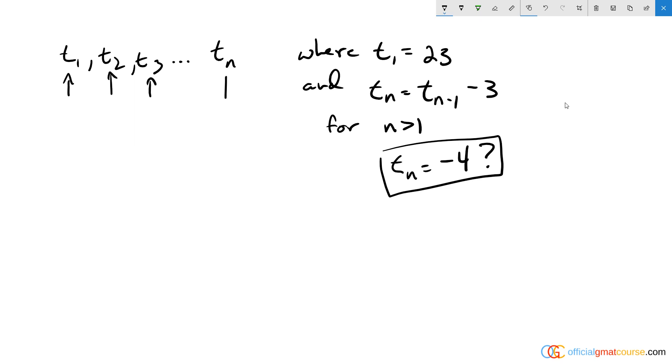This is the third number, all the way through t sub n, which could be any number. We're told the first number in our sequence is 23, and we are also told that every number in our sequence, which could be represented as t sub n, any number is equal to the number that came before it minus 3.